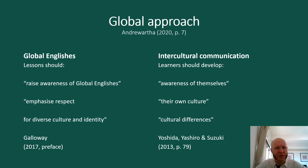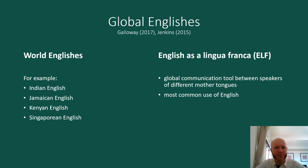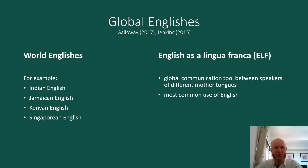They did a focus group with Japanese business people. Global Englishes includes World Englishes — for example, Indian English, Jamaican English, Kenyan English, Singaporean English, and many other varieties of English around the world. Also, Global Englishes includes English as a lingua franca, also known as ELF, which is a global communication tool between speakers of different mother tongues. It is the most common use of English, and it's used in a more flexible and fluid way as the speakers adapt to the situation.